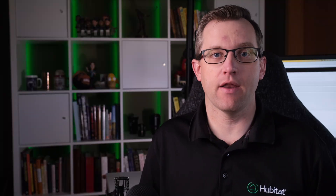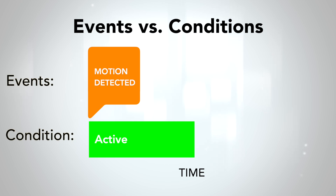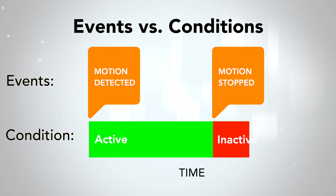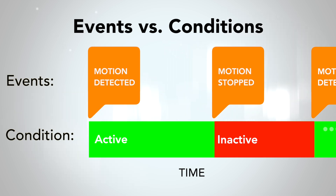Events and conditions do go hand in hand. With the motion sensor, detecting motion is the event. When motion is detected, the condition of the motion sensor becomes active. The condition will remain active until the next event, which is when the motion sensor stops sensing motion. At that event, the condition becomes and remains inactive until the next event. For the TL;DR crowd: an event is when a device tells the hub something happened. A condition is when the hub checks what state a device is in. Triggers are always based on events; conditional rules are always based on conditions.